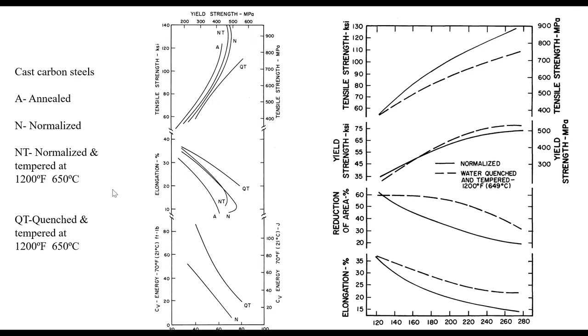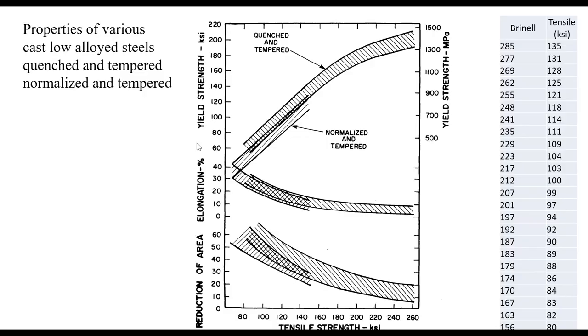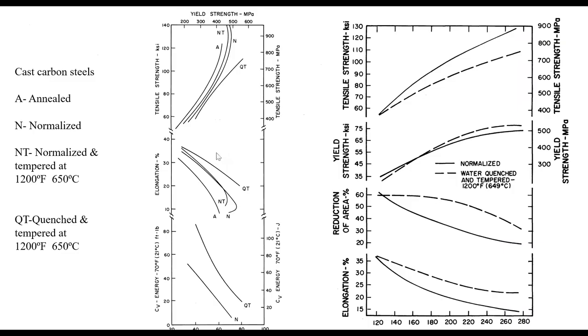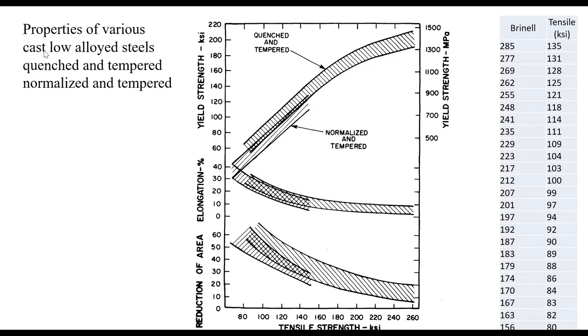I can also do the same kinds of plots versus Brinell hardness. I get the same kind of behavior, not just in carbon steels - this is for cast carbon steels. I get the same thing when I have low alloy steels. Low alloy normally means less than 5% alloy. I get exactly the same kind of behavior.